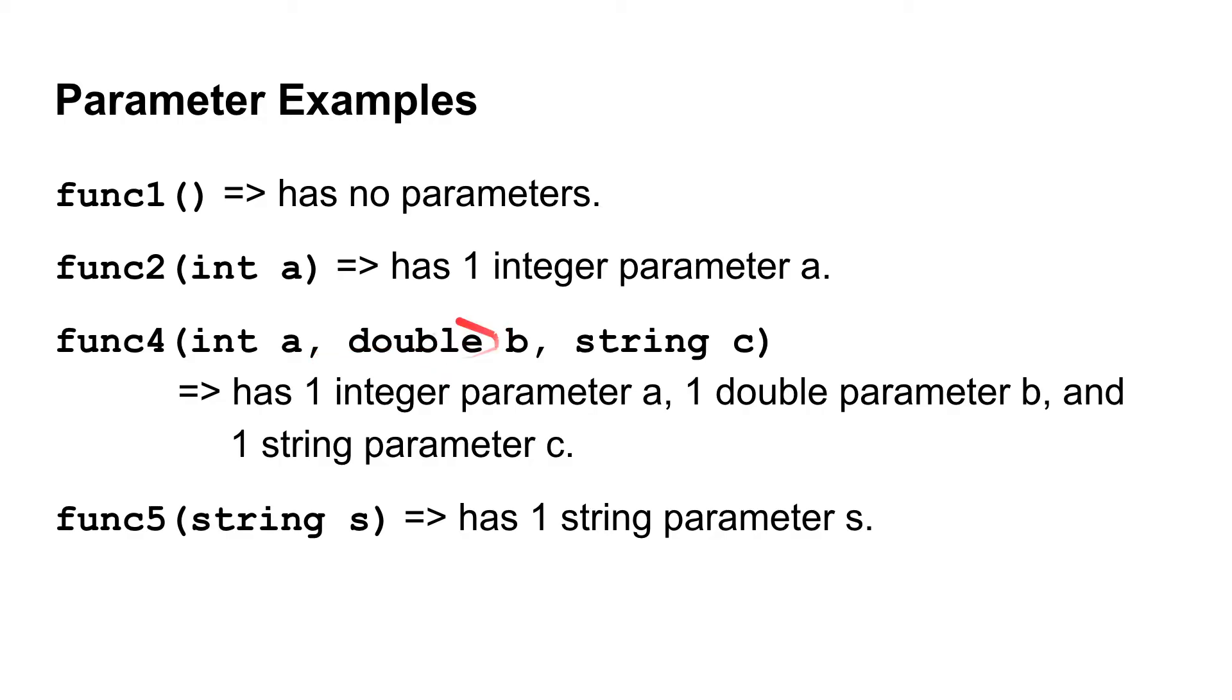And they would have to be in that order. If you put a string at the beginning and then an integer and a double, this function call would not work because this function only takes in its parameters in the order of an integer, a double, and then a string.